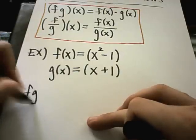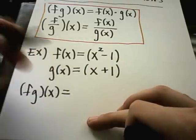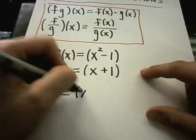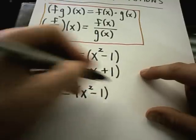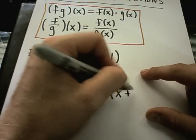So if they wanted us to find f times g of x, all that again means is I take my original function f of x, which is x squared minus 1, and then I simply multiply that by g of x, which is x plus 1.